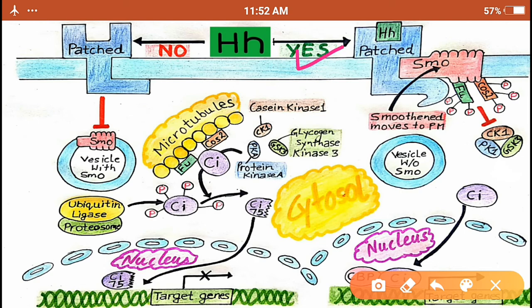The signaling molecule or the ligand, here the Hedgehog, binds to the receptor known as Patched. The binding of the ligand to the Patched receptor releases the inhibition which was caused by the Patched receptor on Smoothened.